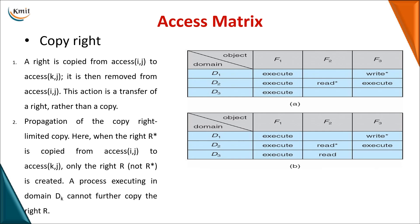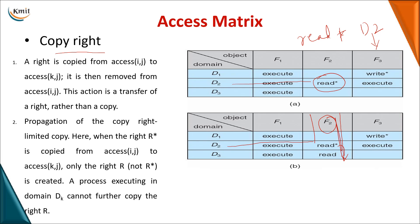The next operation on the access matrix is copy right — meaning one domain can give a right to another particular domain; one domain can give access of the same operation to another domain. When you see a particular column, D2 has a read operation with an asterisk symbol. This indicates that domain can give this read operation right to some other domain. Since D2 has read-star on F2, that read operation can be copied into some other domain from the same column.